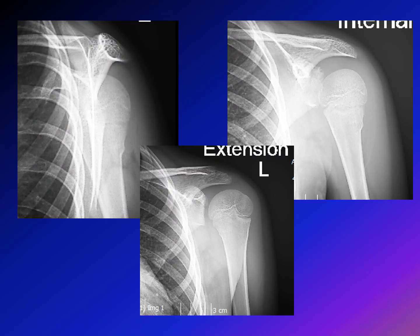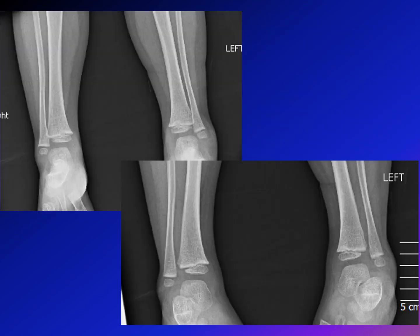Another area of torus fracture: the proximal humerus. You can see the small knob, and in the anteroposterior view with internal rotation, the fracture can be seen on one cortex — there is failure in compression. All these are examples of torus fracture. As said, the most common is the distal radius, but it can happen in other places.